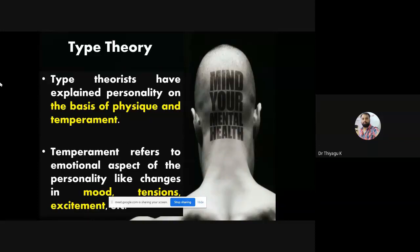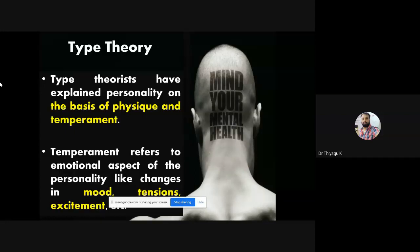The type theory explains the personality of people based on physique and temperament. Their intention is to divide the personality of people into different types. That type is generated based on the physique — the outlook of the people — and they are associating it with their temperament also. However, we cannot come to any absolute conclusion — that those who are very lean are very adamant, or those who are very fat are very lazy. That kind of general assumption we cannot make.